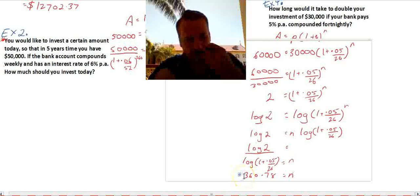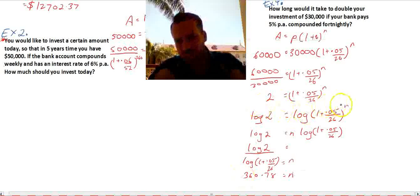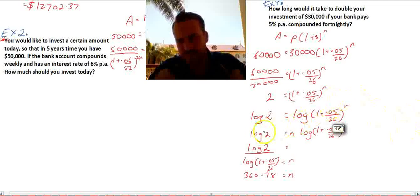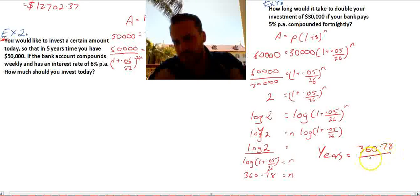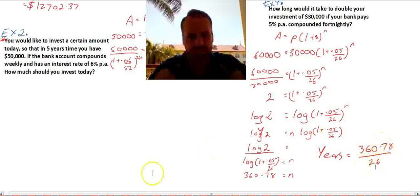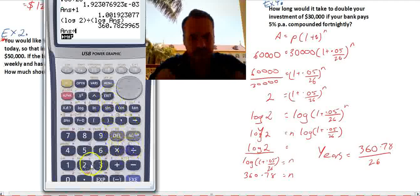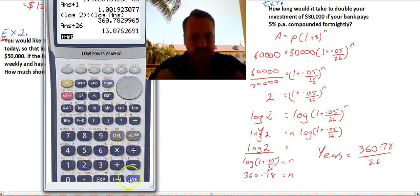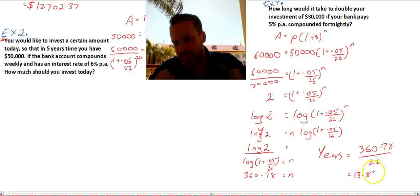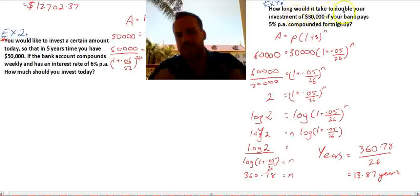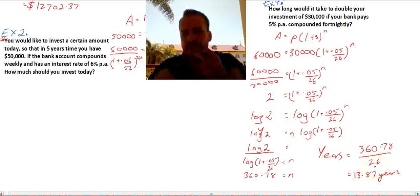How long will it take to double your investment of $30,000 if your bank pays 5% per annum compounded fortnightly? That 360 represents the number of fortnights. So, if we want to know the number of years, because 360 fortnights doesn't really mean anything to me. Years. It's going to be equal to 360.78 divided by 26 because there's 26 of those in a year. That gives us 13.87 years. Okay, let's stop and think about that question. How long will it take to double your investment of $30,000 if your bank pays 5% per annum compounded fortnightly? It's going to take 13.87 years.